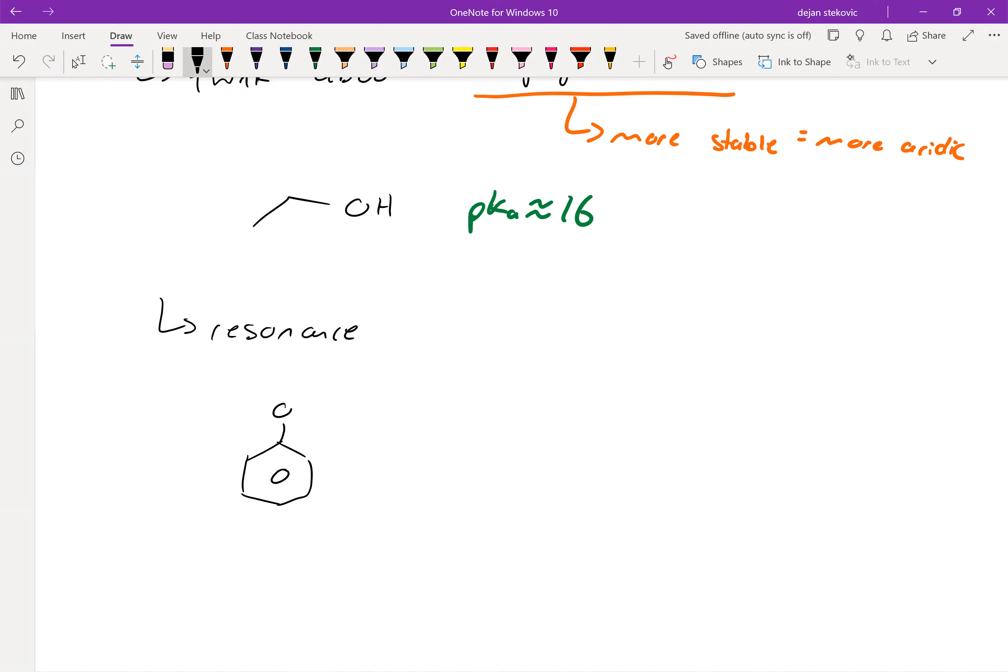So for example, phenol, that has a pKa of approximately 9.9. So we can tell that's significantly more acidic than our ethanol. And then if we think about the conjugate base, take out an H+, we can think about why it's more acidic.